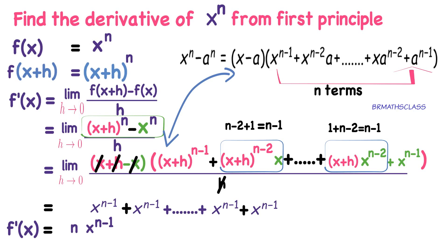From now onwards we take this as a formula: the derivative of x power n is n into x power n minus 1. I hope you understand this class. If you like this video, please press the like button below. Share this video with your friends. If you are not yet subscribed to my channel, please subscribe now. Thanks for watching. Bye bye.